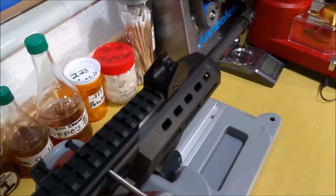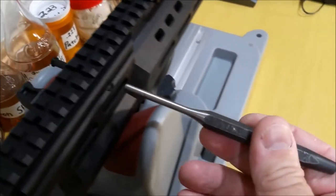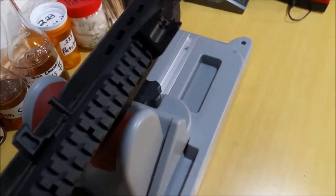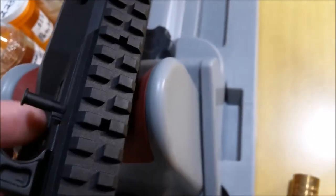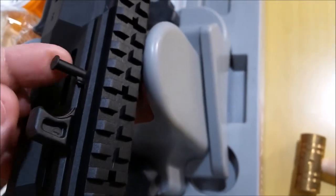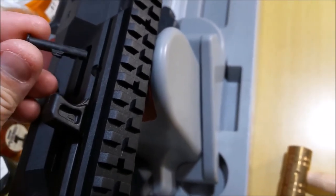After the punch is going through, you can see the other pin starting to move. Remove the punch, rotate the firearm onto its side. There's a pin, this is the retention pin that actually holds the charging handle in from going forward. Just give it a slight wiggle and it will pull straight out.